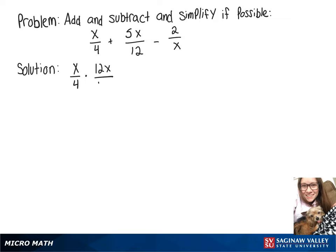So we'll multiply x over 4 by 12x over 12x, and that'll give us 12x squared over 48x.